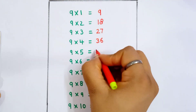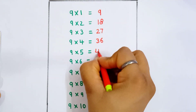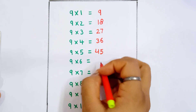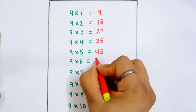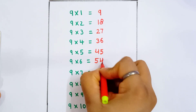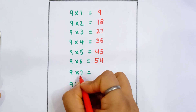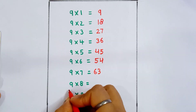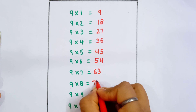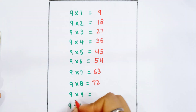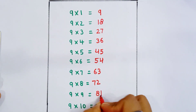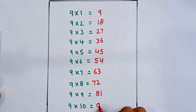9 5 is 45. 9 6 is 54. 9 7 is 63. 9 8 is 72. 9 9 is 81. 9 10 is 90.